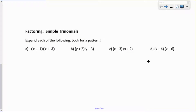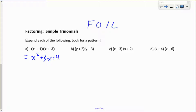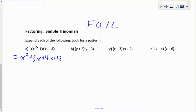Another thing we did at the beginning of the course was expanding using FOIL. When you multiply two binomials together using the distributive property, you multiply the first terms — x times x gives x squared — then the outside terms, x times 3 is 3x, the inside terms, 4 times x is 4x, and the last terms, 3 times 4 is 12. Alternatively, you multiply everything in the first bracket by everything in the second bracket — by x, then by 4.